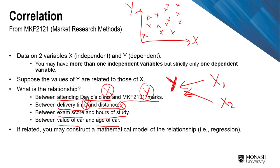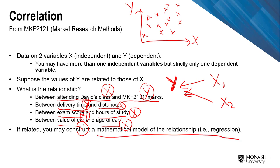Between exam score and hours of study — if you study more, then hopefully it will make your exam score look better. That's your Y. And lastly, the value of car and the age of car. Obviously, the age of car will determine your value of car — that's your X and that's your Y. So now, after you determine what's your X and what's your Y, you can construct a mathematical relationship, which is regression.